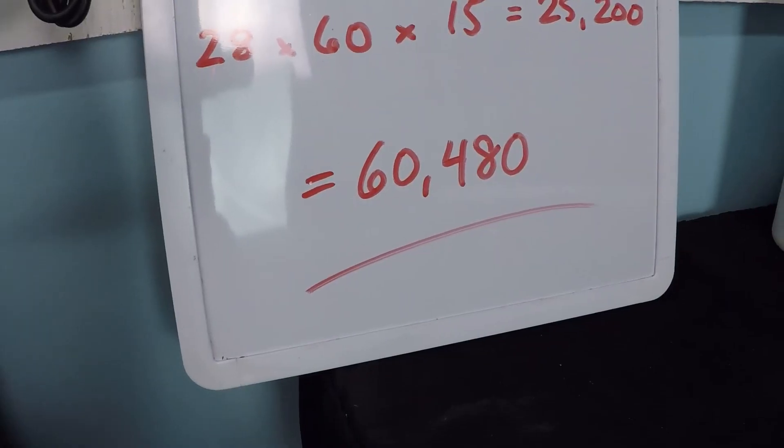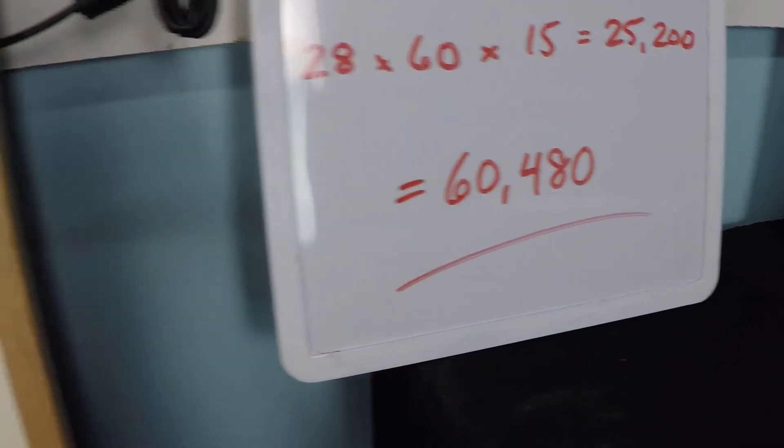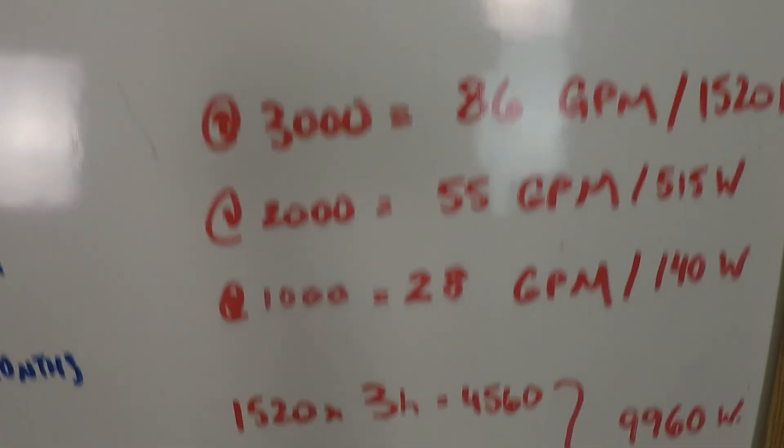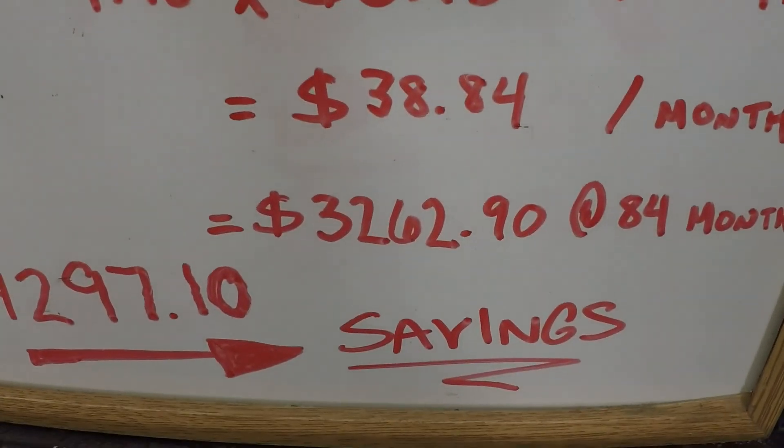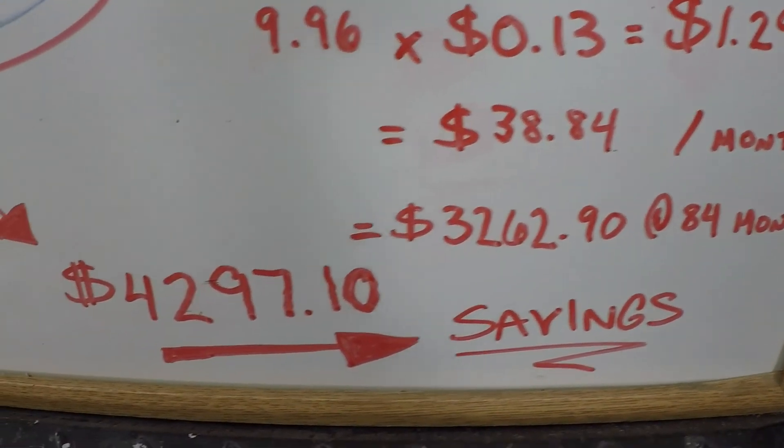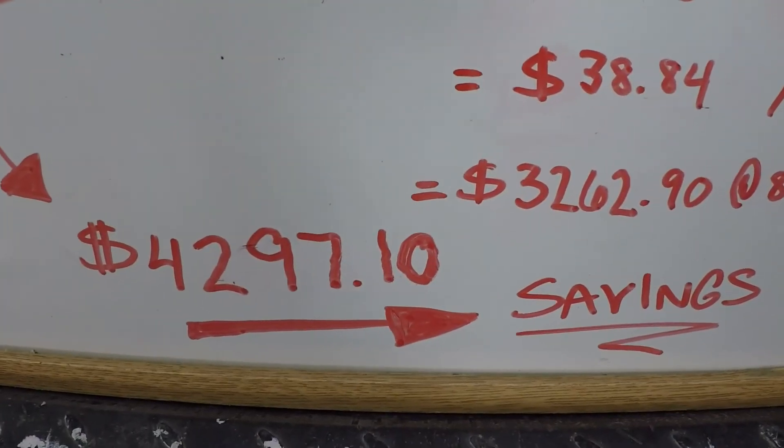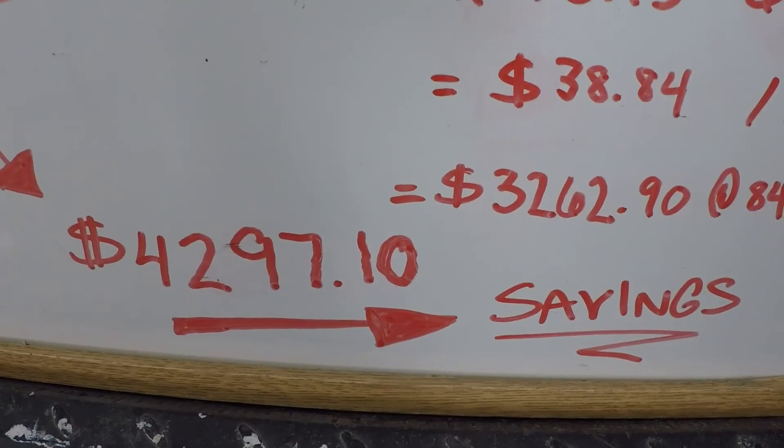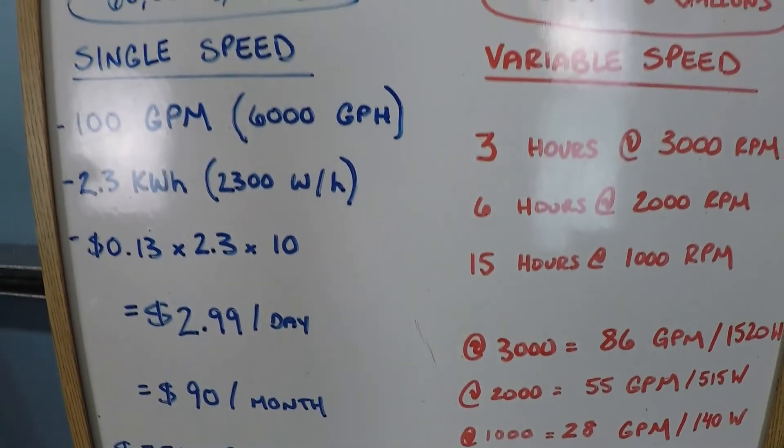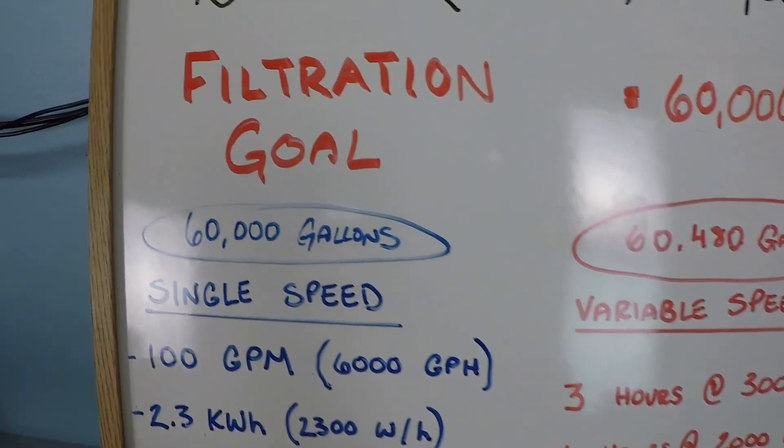60,480 gallons per day with a variable speed pump for $38 per month. And over a service life of the pump, you're going to be saving $4,300. And it's specifically interesting.